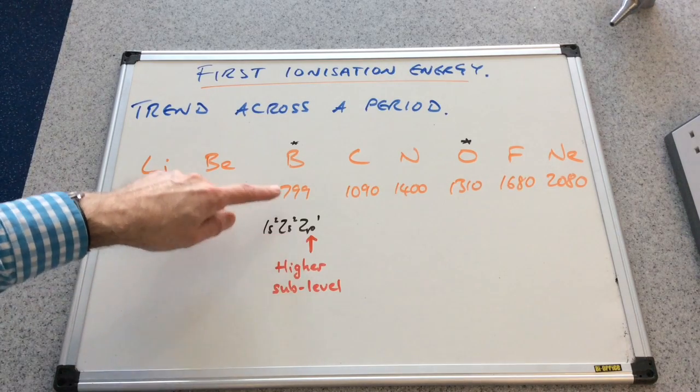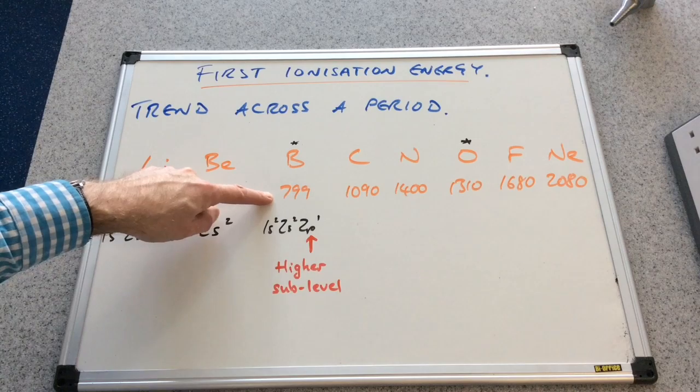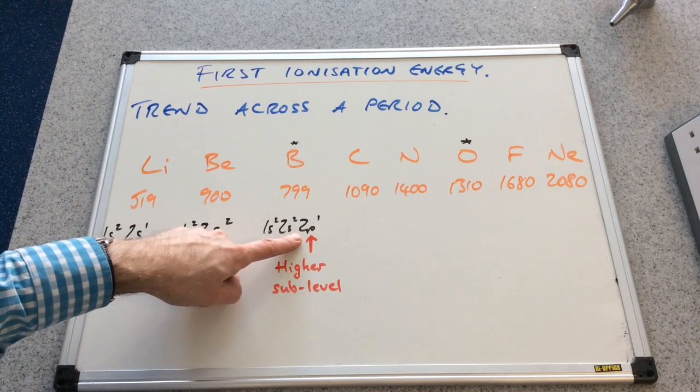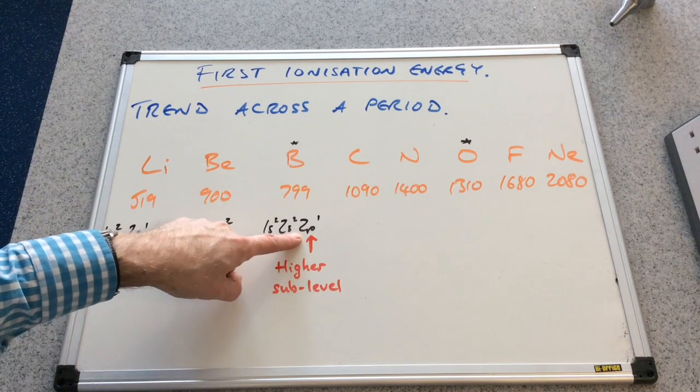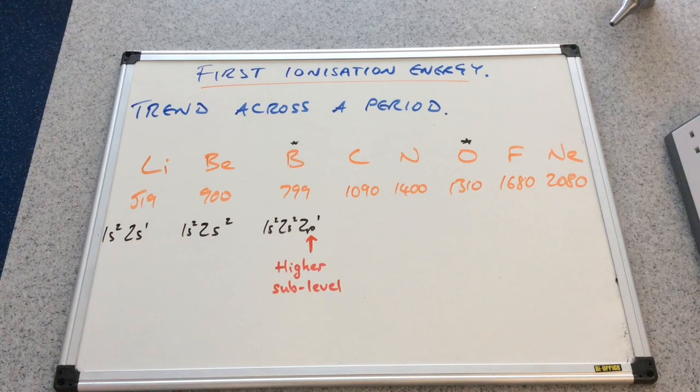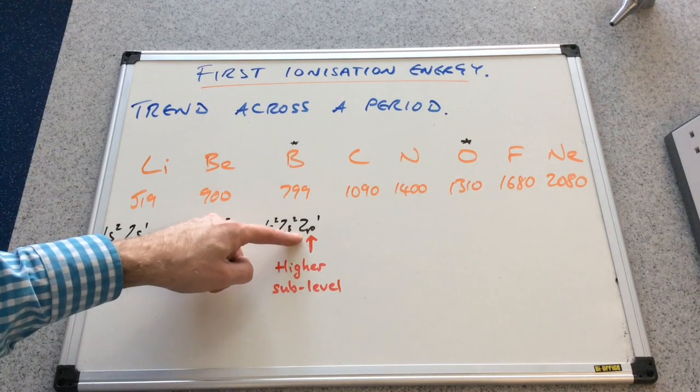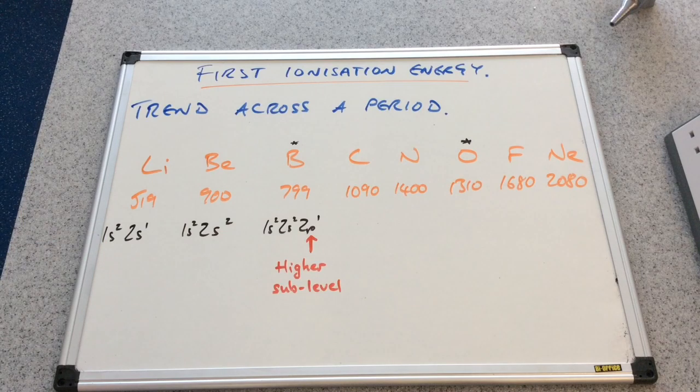The reason for the dip in our first ionisation energy for boron is because we're removing an electron from a higher sub-level. So the 2p sub-level is actually a little bit higher in energy than the 2s. And so it takes a little bit less energy to remove that electron.